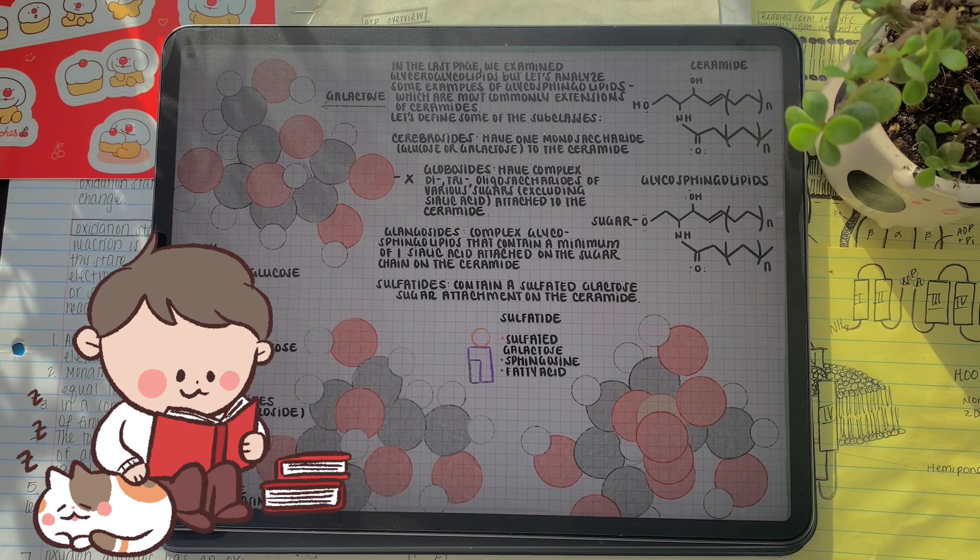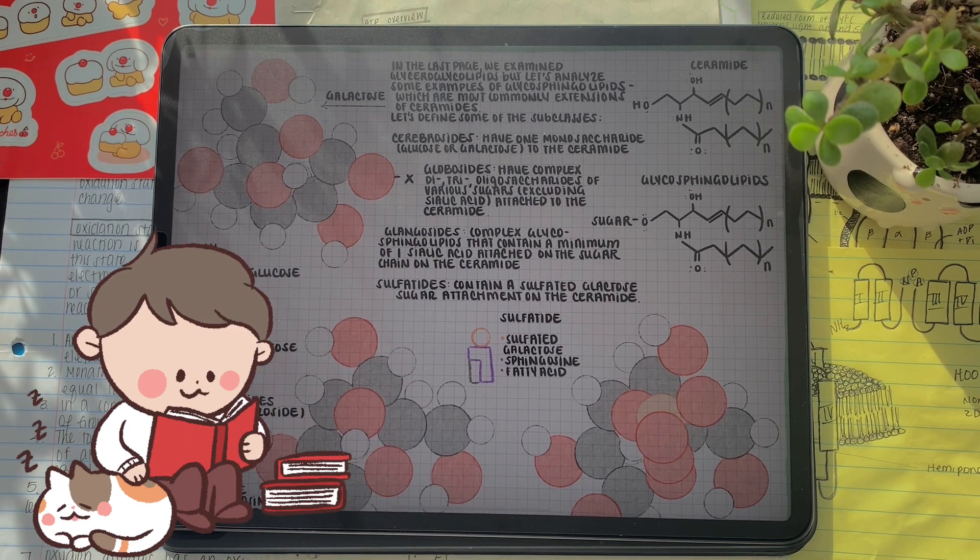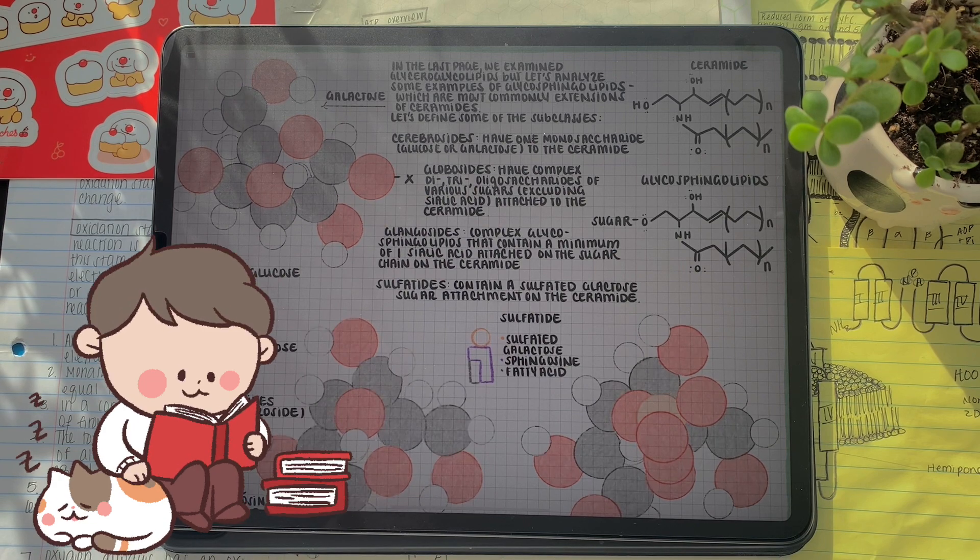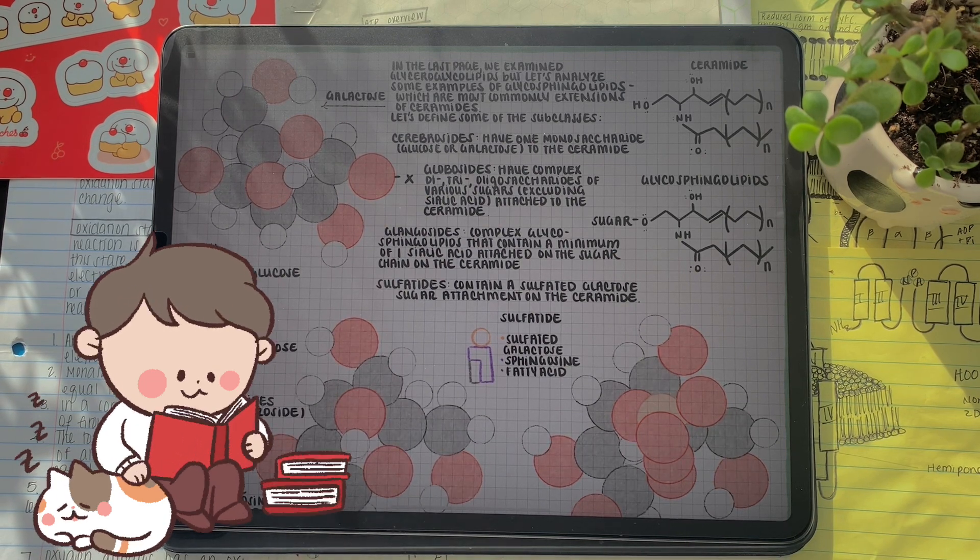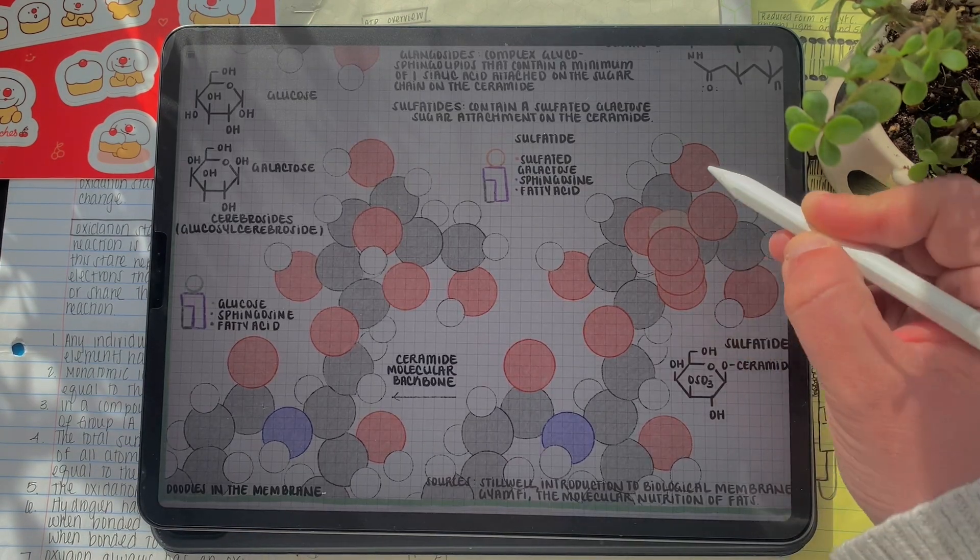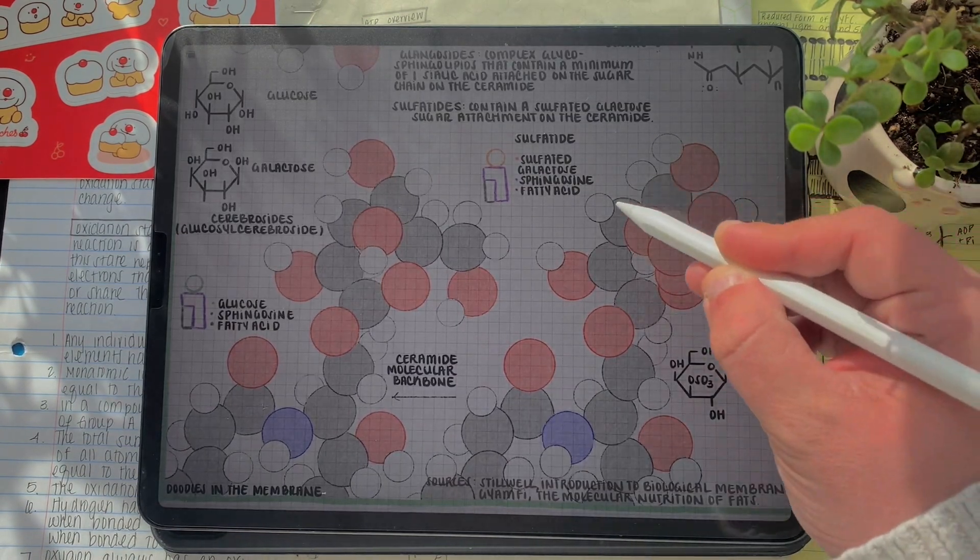Next are the more complex glycosphingolipids with specific sugar derivatives. Gangliosides are similar to globosides, yet contain a specific sialic acid attachment. On the other hand, sulfatides contain a specific sulfated galactose attachment.